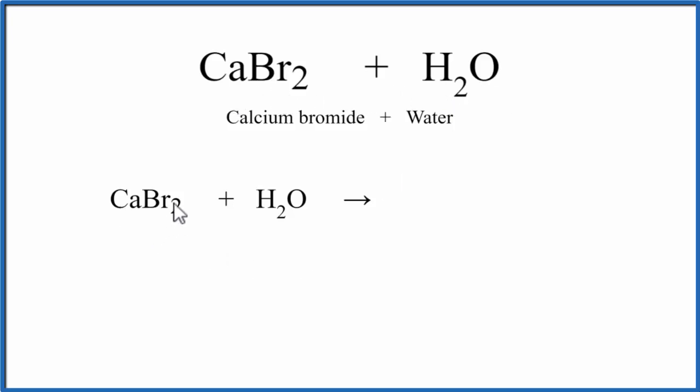Calcium, that's a metal, and then bromine, that's a non-metal. So when we have this metal and non-metal together, we have an ionic compound, and quite often they're soluble in water.